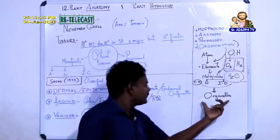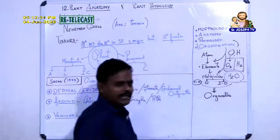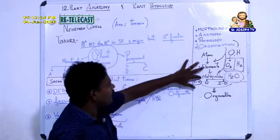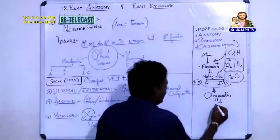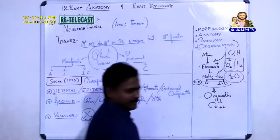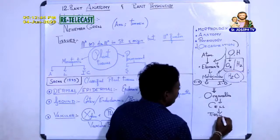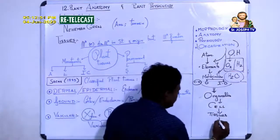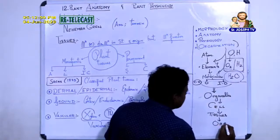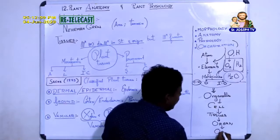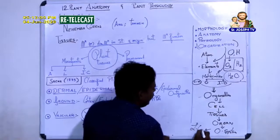Many organelles group together to form a cell. Many cells group together to form tissues. Many tissues group together to form organs. Many organs group together to form organ systems. And many organ systems together form a living organism.